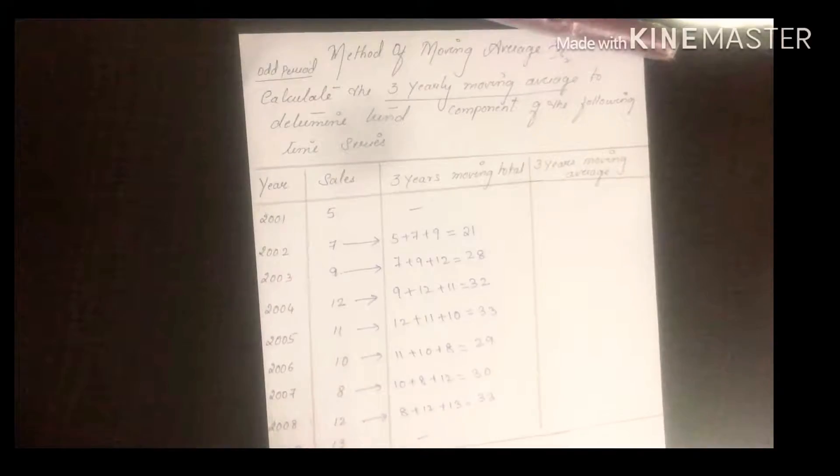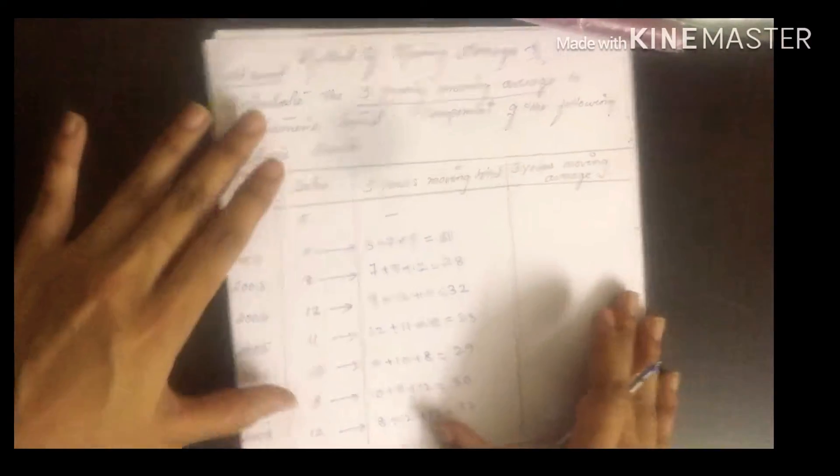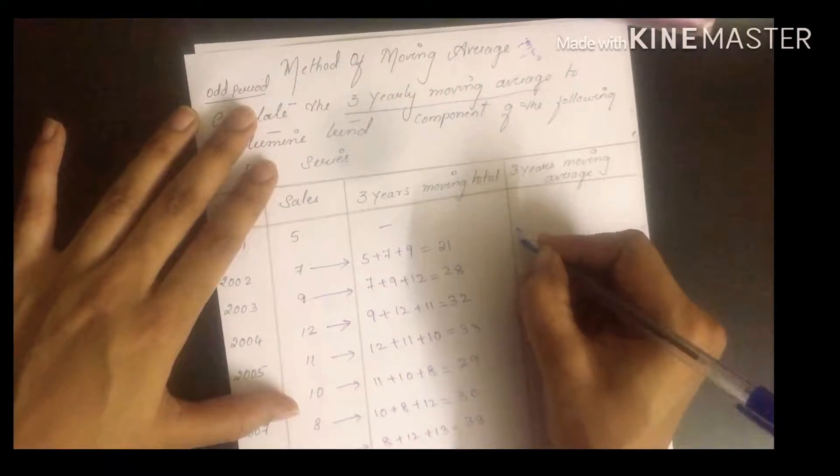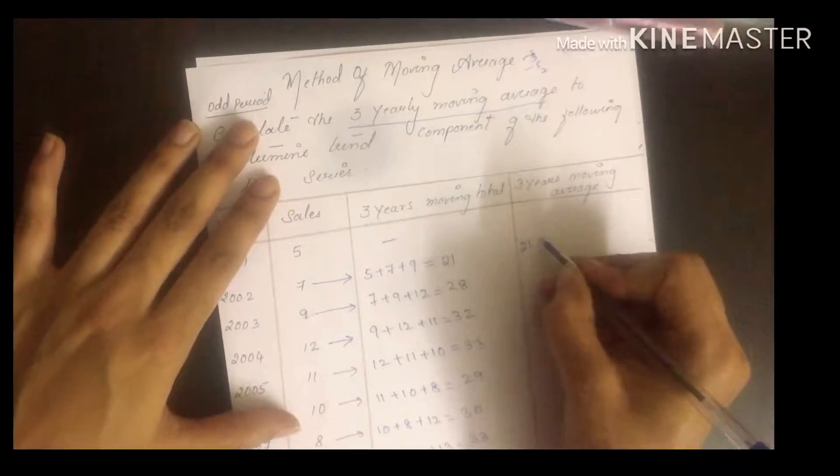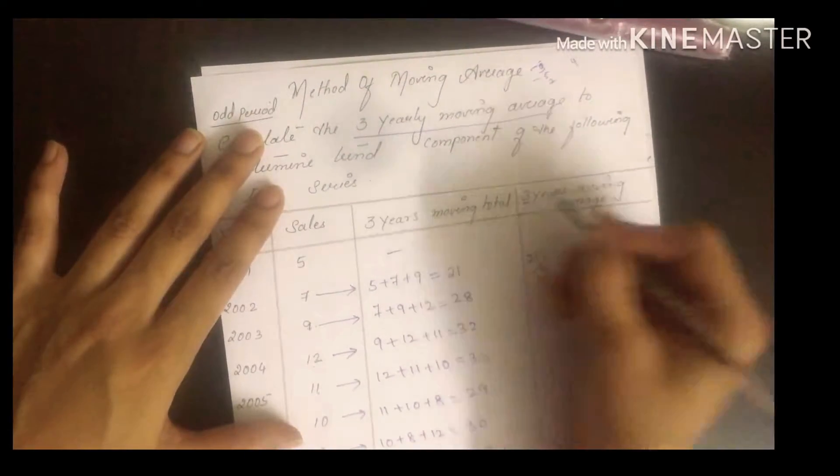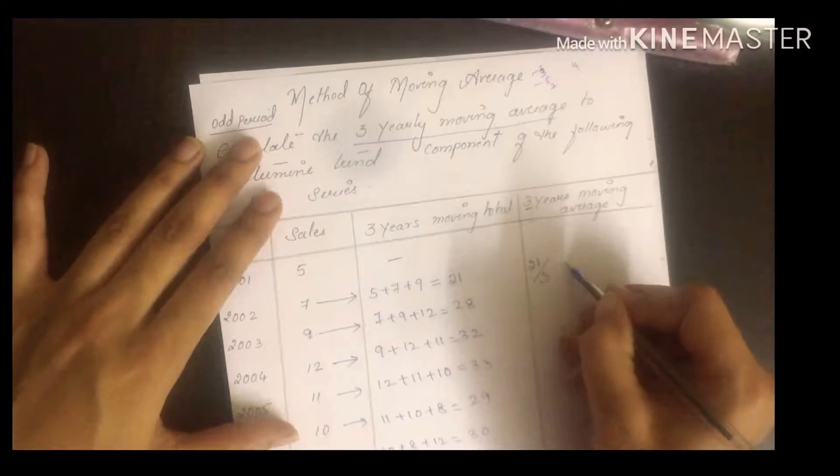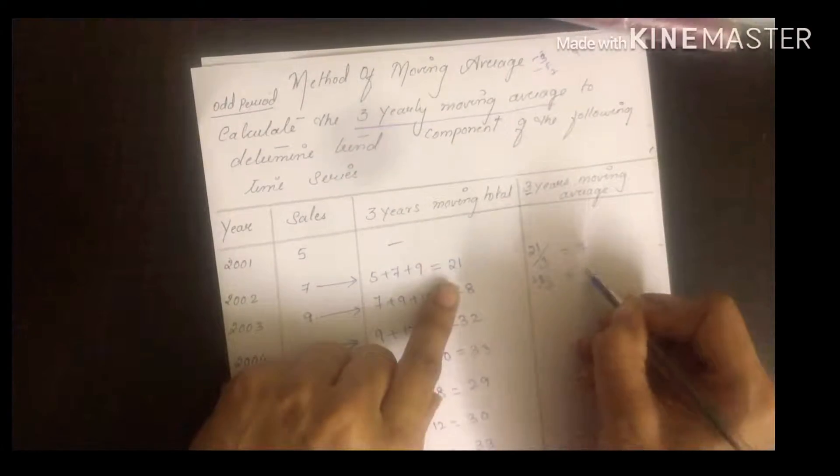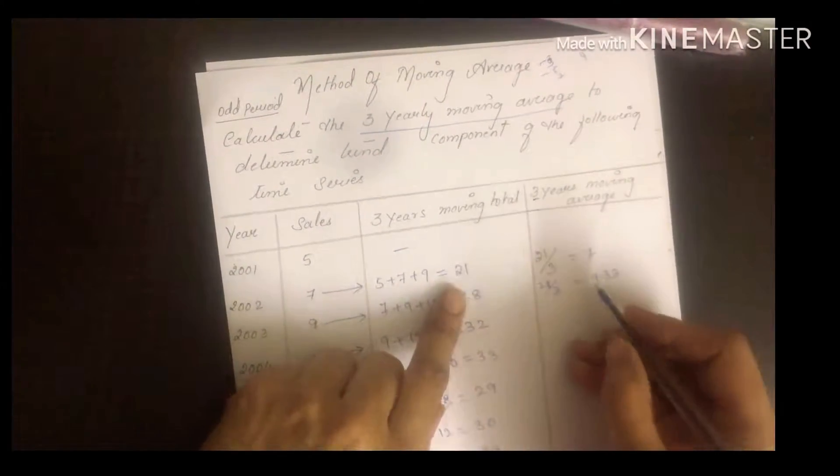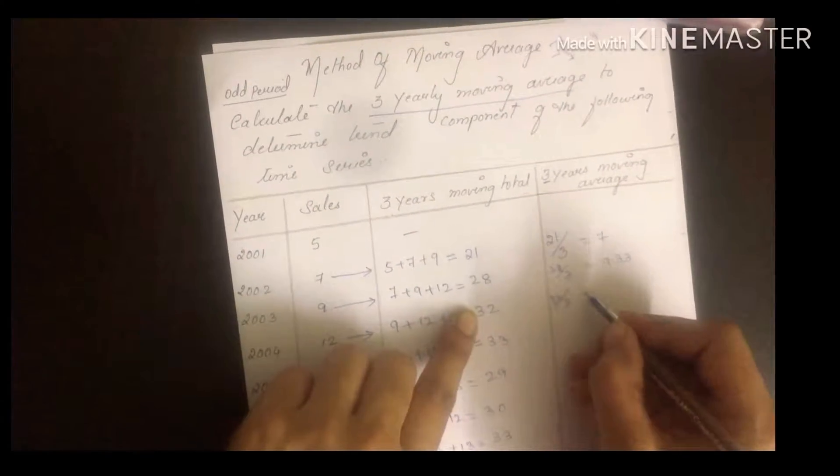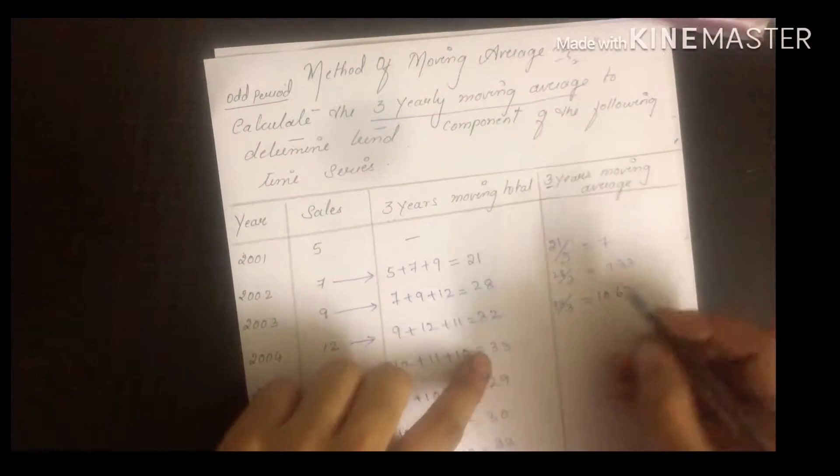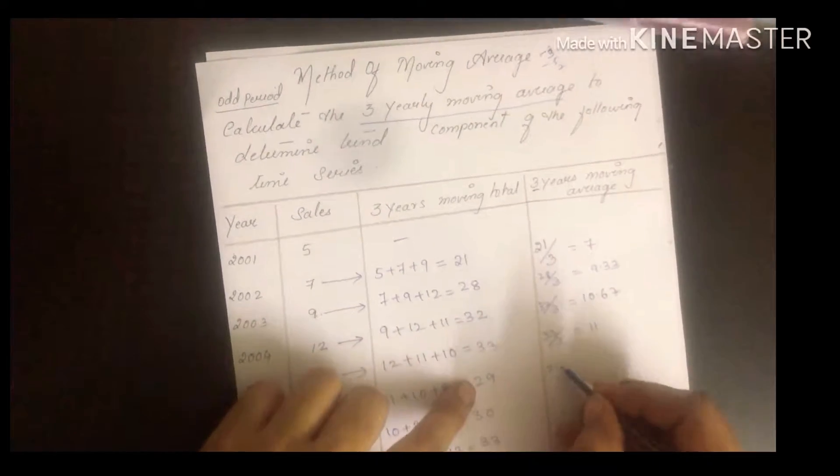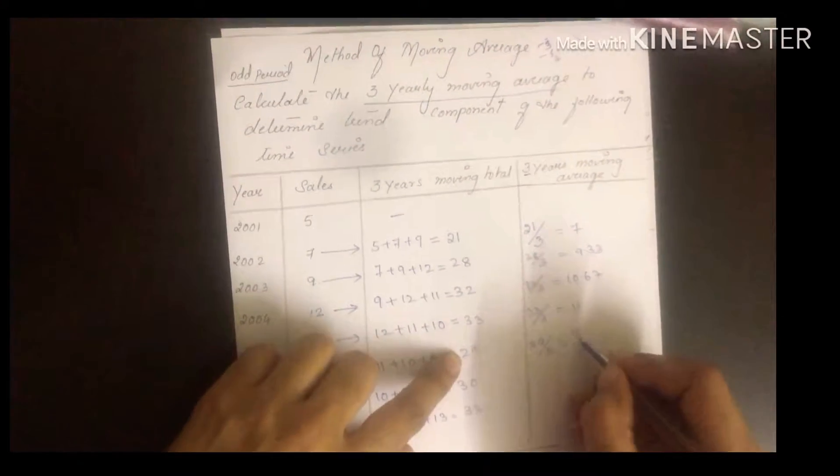11 plus 10 plus 8 equals 29. 10 plus 8 plus 12 equals 30. 8 plus 12 plus 13 equals 33. Basically in 3 years, first year and last year remain blank. Now for 3 years moving average, average means 21 divided by 3. Why 3? Because it's 3 years. 21 divided by 3 is 7. 28 divided by 3 is 9.33. 32 divided by 3 equals 10.67. 33 divided by 3 equals 11.